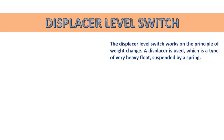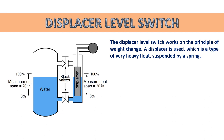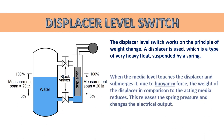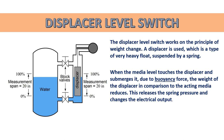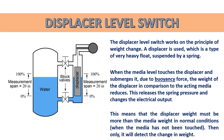The displacer level switch works on the principle of weight change. A displacer — a very heavy float — is suspended by a spring. When the media level touches and submerges the displacer, buoyancy force reduces the effective weight of the displacer. This releases the spring pressure and changes the electrical output. The displacer weight must be greater than the media weight under normal conditions, before contact, so that it can detect the change in weight.